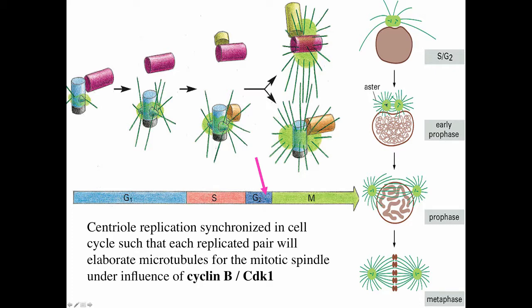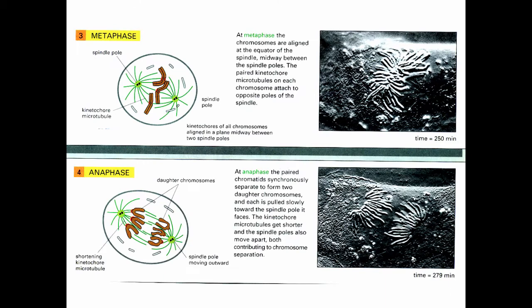At metaphase, the chromosomes are aligned at the equator of the spindle midway between the spindle poles. The paired kinetochore microtubules on each side of the chromosome attach to opposite spindle poles.